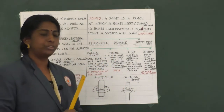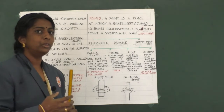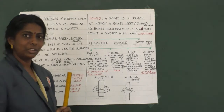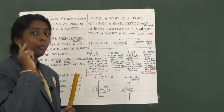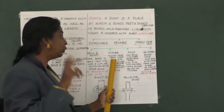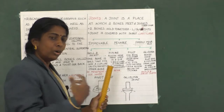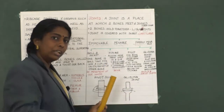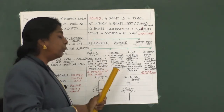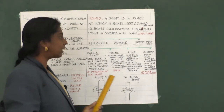The second type is the hinge joint. Have you noticed how a door hinge moves — only back and forth in one plane? Similarly, this joint allows movement only in two directions: either backward or forward, or upward or downward. The hinge joint always moves in only one plane. For example, the knee joint.